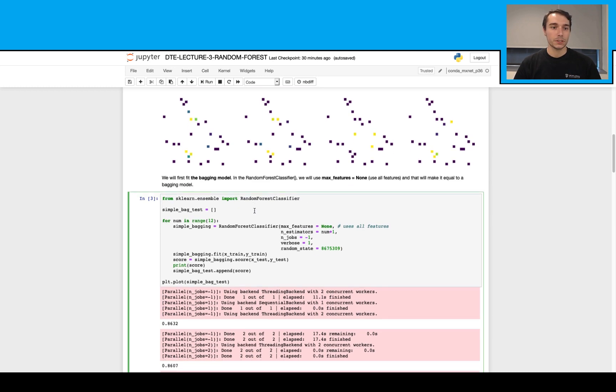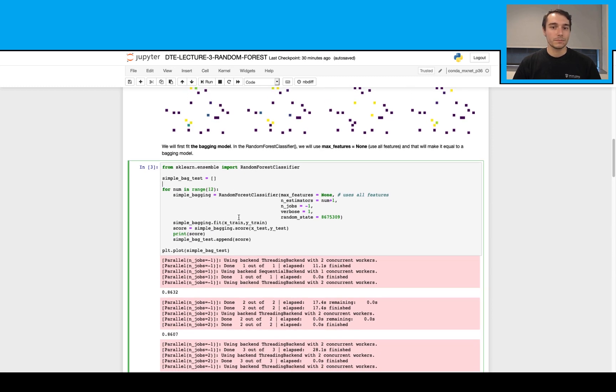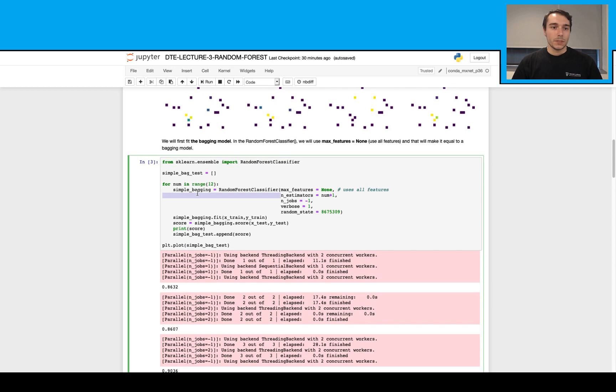So let's do that. I'm going to import my random forest classifier. And I have a for loop here, where I change my number of estimators with that. And I pass my max features None parameter here, which makes this act like a bagging model at this point.